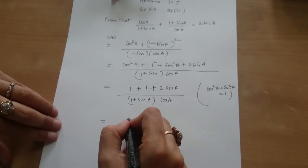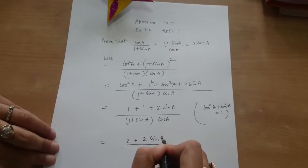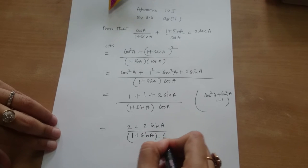This is equal to, in the numerator we have 2 plus 2 sin A upon 1 plus sin A into cos A.